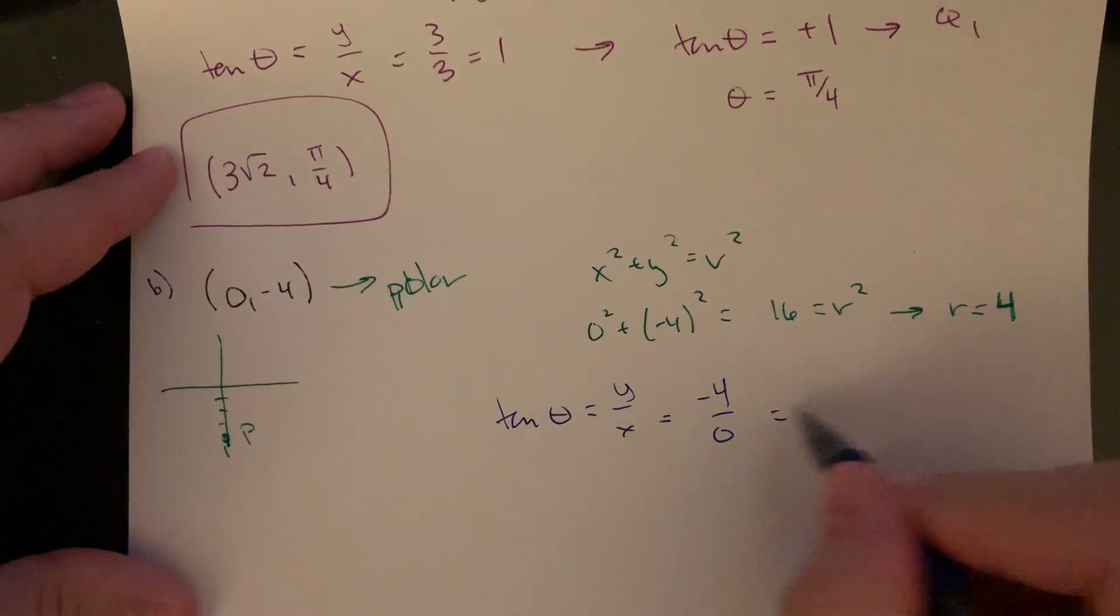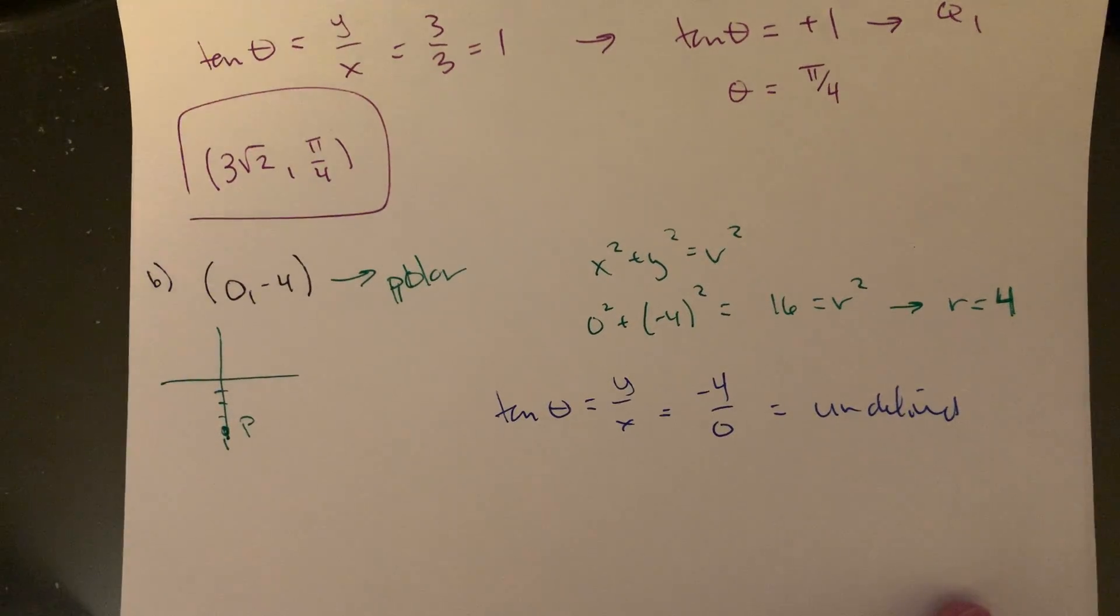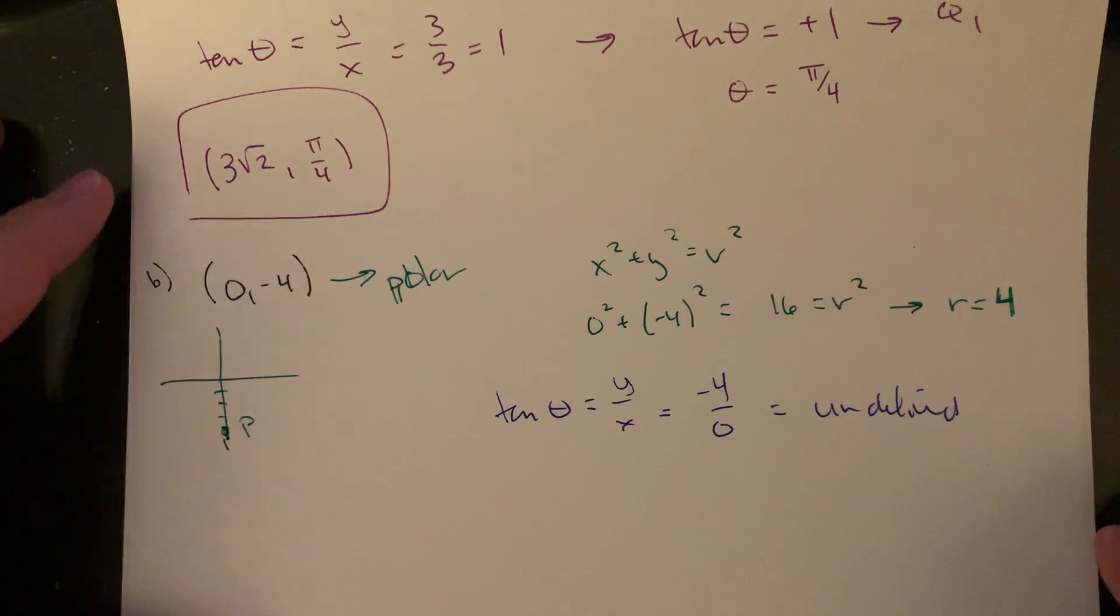So that's negative 4 over 0. That's like undefined, a division by 0. For tangent, that's going to happen when we're either at pi over 2 or 3 pi over 2. That's going to be where my x value is 0.